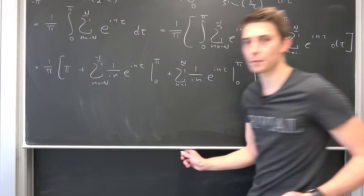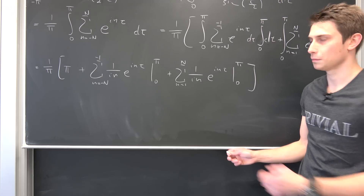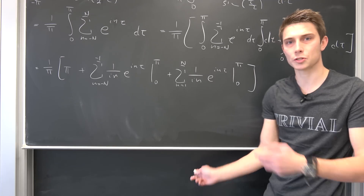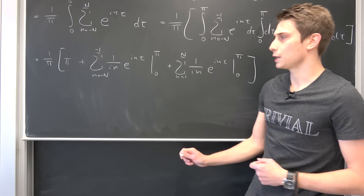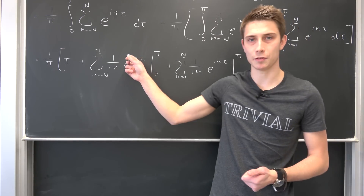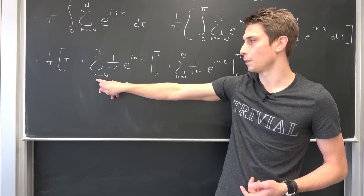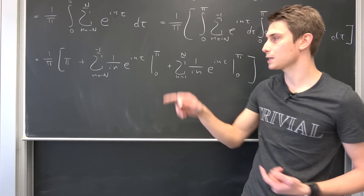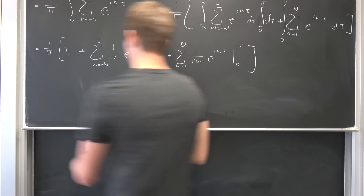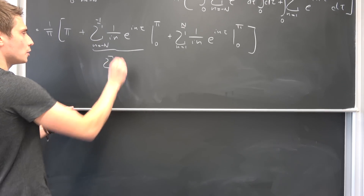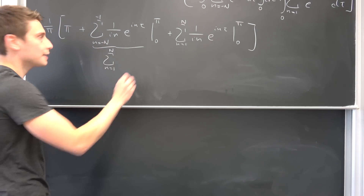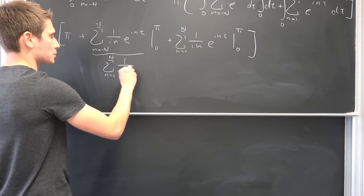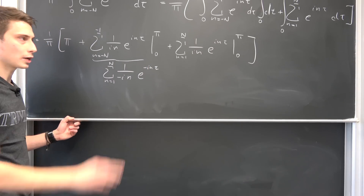To combine the two exponential sums, we introduce the substitution k = -n on the negative sum. This changes the running index so that it goes from n = 1 to N, and replaces n with -n throughout, giving (1/(-in)) · e^(-inτ). We can now rewrite the negative sum as the sum from n = 1 to N of (1/(-in)) · e^(-inτ).